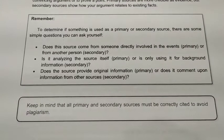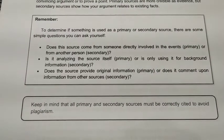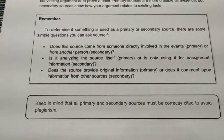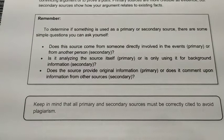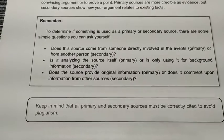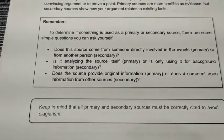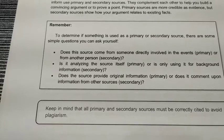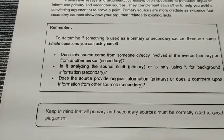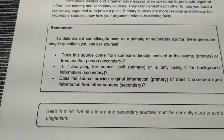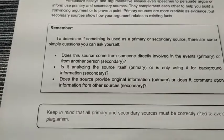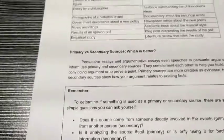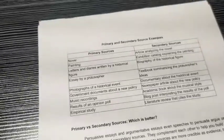Keep in mind that all primary and secondary sources must be correctly cited to avoid plagiarism. No matter if it's primary or secondary, you have to cite it and acknowledge them, because it's not your own property. Whatever source you have used, you will mention it in your article out of respect and as a sign of intellectual property rights.